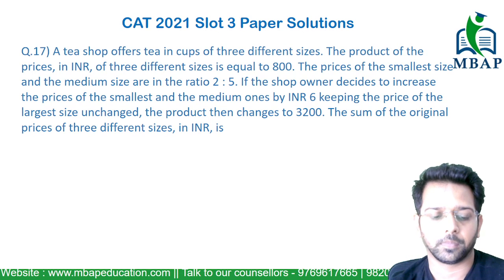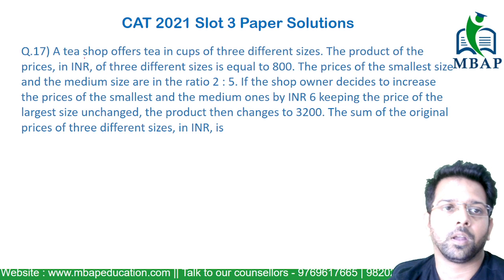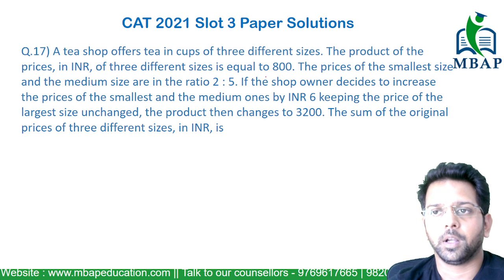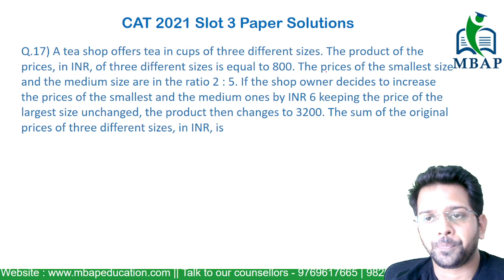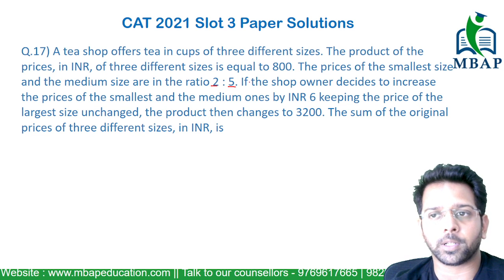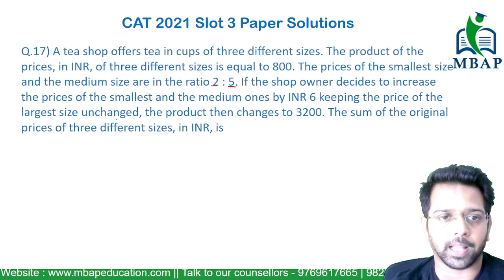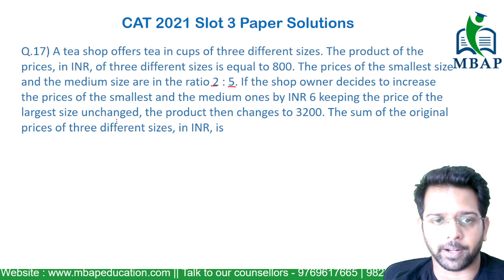Let's have a look at the next question. A tea shop offers cups of different sizes. The product of the prices of the three sizes is equivalent to 800. The prices of the smallest size and the medium size are in the ratio of 2 to 5. If the shop owner decides to increase the price of the smallest and the medium ones by 6 each, keeping the price of the largest unchanged, the product becomes 3200.